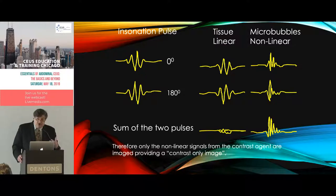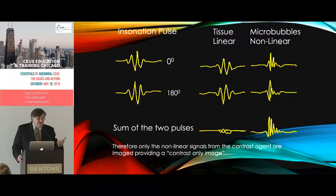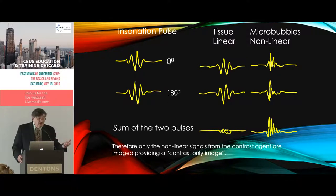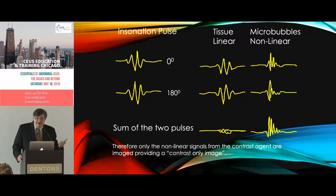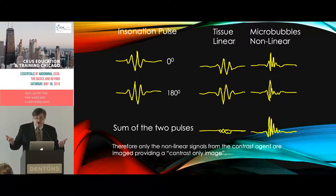We can also subtract the linear responses so that when added together we get our B-mode image back. So we can have both a real-time B-mode image — not quite as good as our standard B-mode, but enough to flag where a lesion is and know exactly where you're at — and our contrast-only image at the same time. We get the best of both worlds.